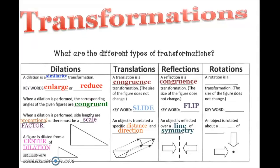Rotations. A rotation is a congruence transformation. The sides of the figure do not change. That's all it means when you hear the word congruence. It stays the same. A keyword is turn. An object is rotated about a center of rotation.